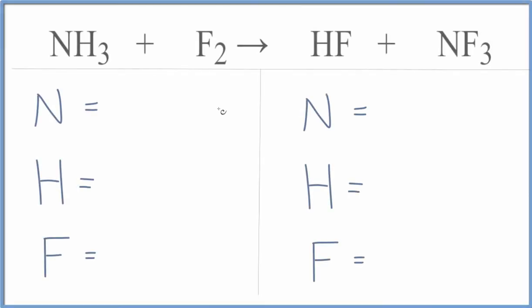Let's add up the atoms on each side of the equation. We have one nitrogen, three hydrogens, and two fluorines on the reactant side.